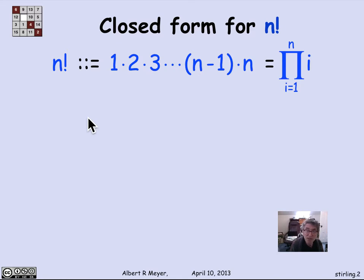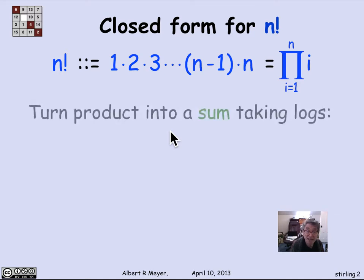So what I'd like to do is get an asymptotic estimate for n factorial. Again, n factorial is one of these quantities where there isn't any exact formula that doesn't have those ellipses in it. There's no short formula with basic operations, fixed size formula that expresses n factorial. But we get a nice formula for a tight asymptotic estimate. So the first trick is to turn the product into a sum by taking logs.